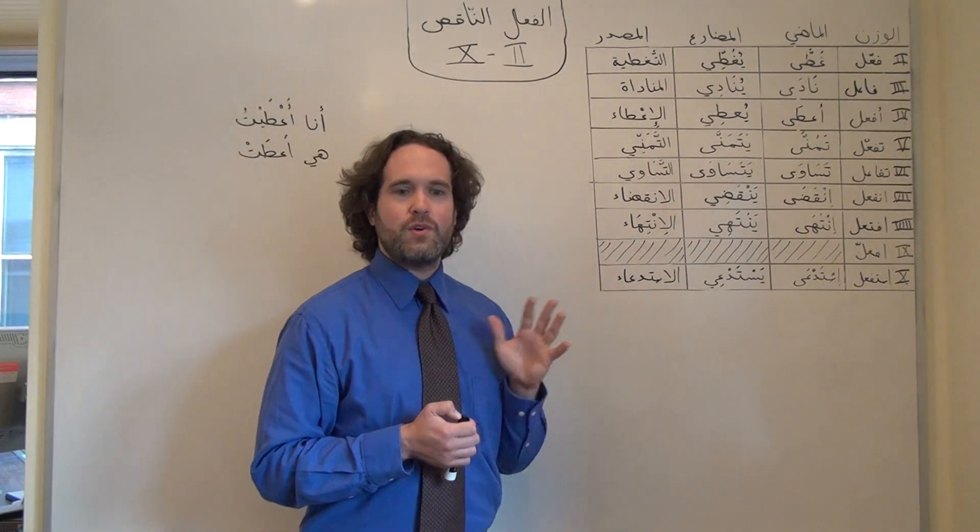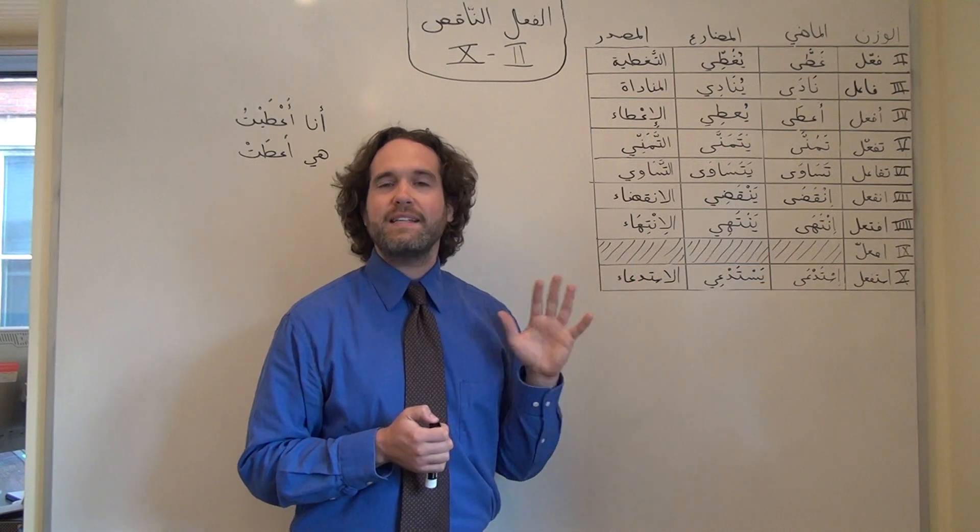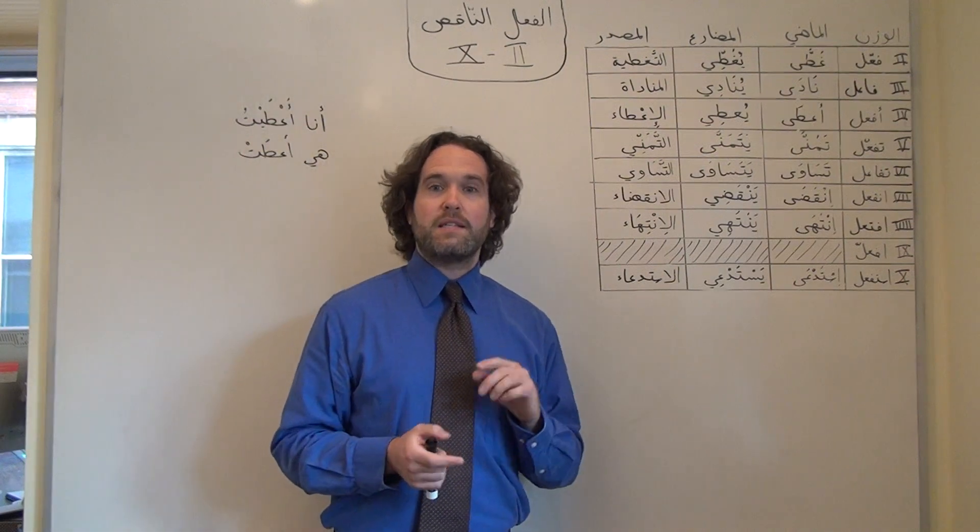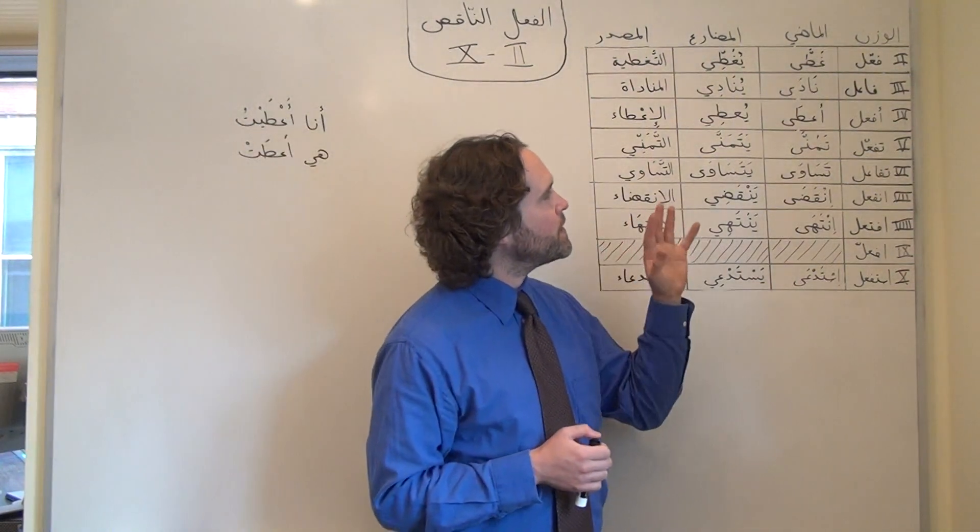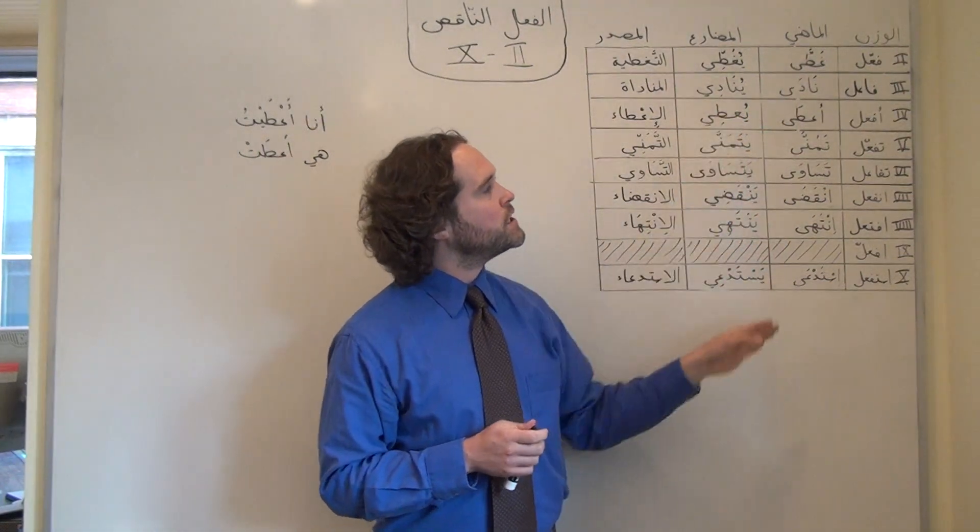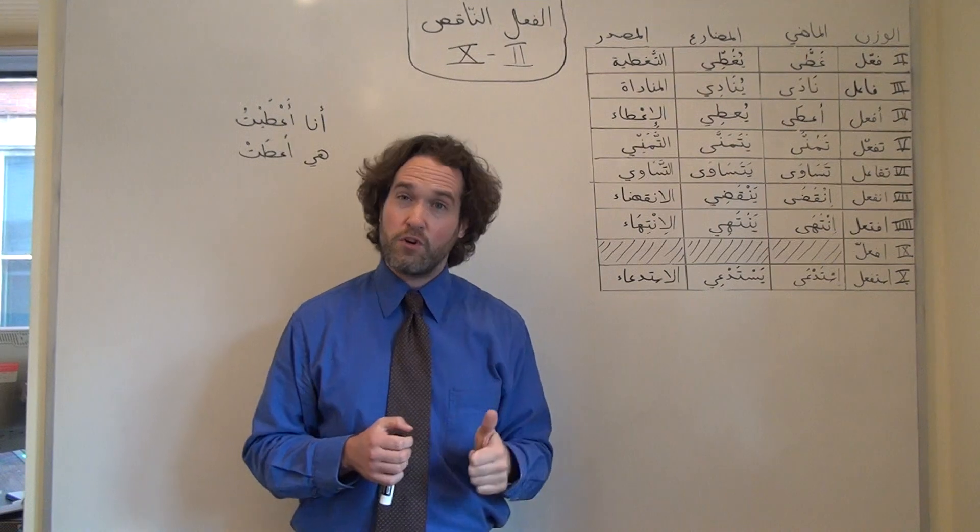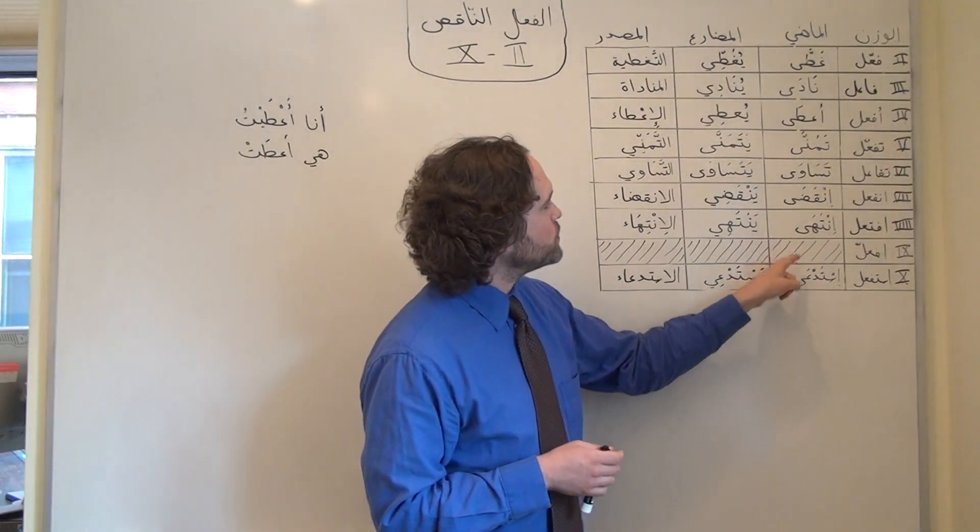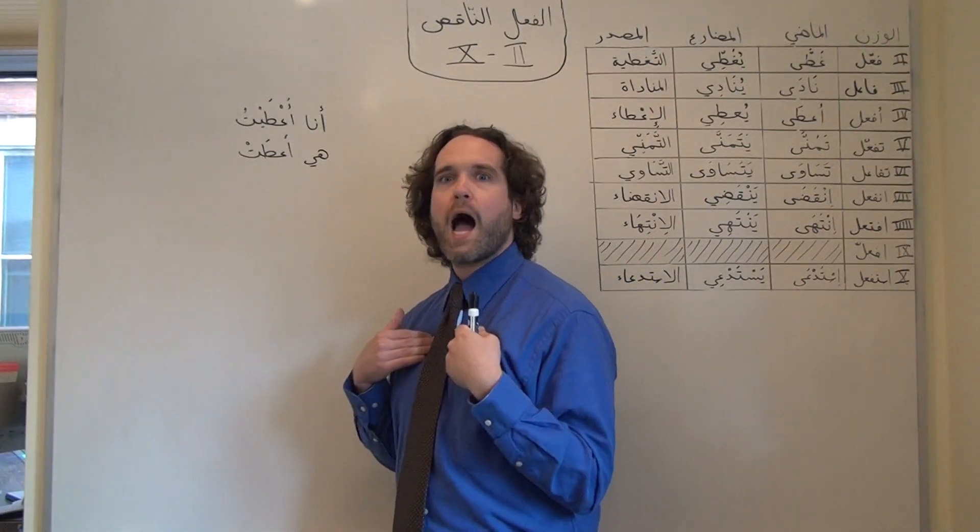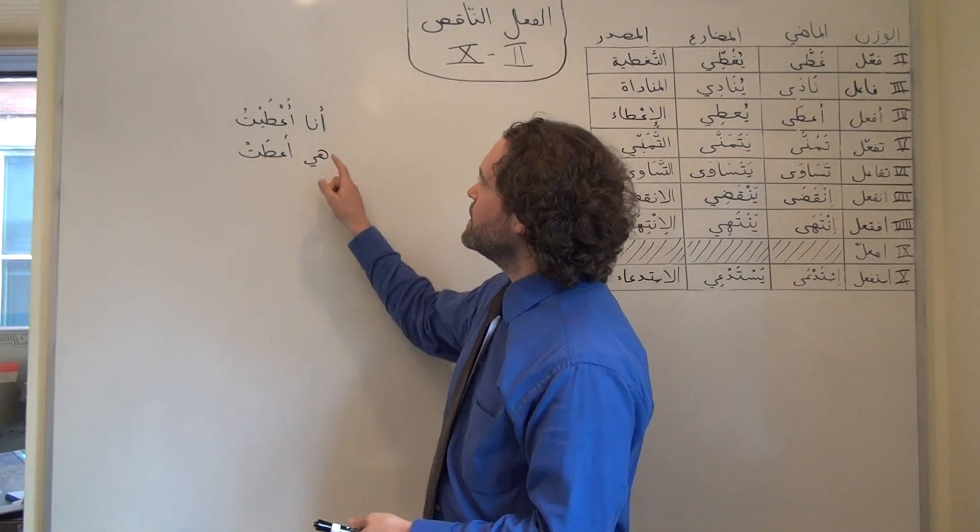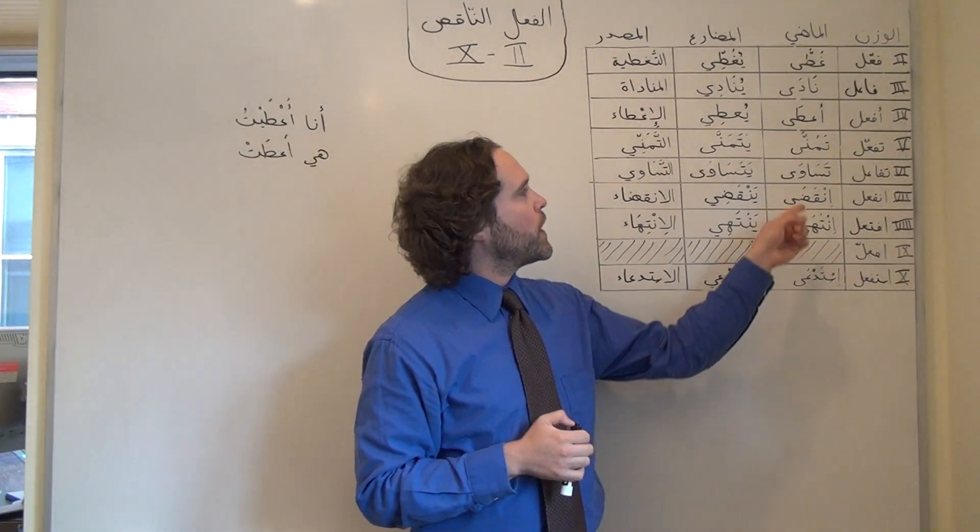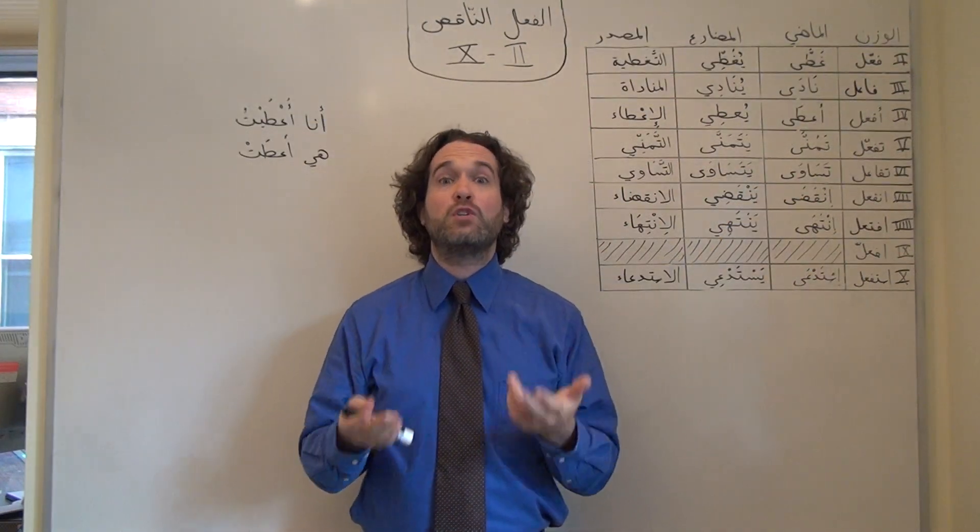So in the past tense, all of these verbs work exactly like I described in the first video on Form 1 فعل ناقص. The good news is that instead of having to think about what our vowel might unpredictably change into, in every single one of these derived patterns for first and second person conjugations, the ألف مكسورة that we see at the end is going to turn into a يا. So for example, if I were saying I gave in the past tense, I would say أنا أعطيت. Or if I were talking about how I hoped, I would say تمنيت, etc.